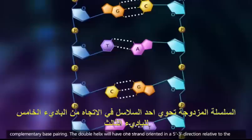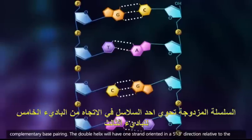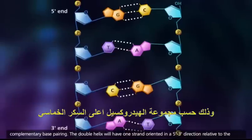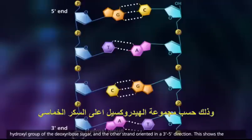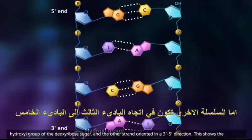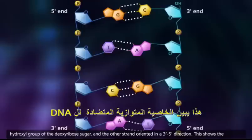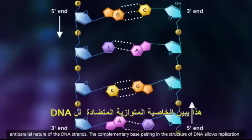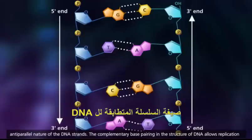The double helix will have one strand oriented in a 5' to 3' direction relative to the hydroxyl group of the deoxyribose sugar, and the other strand oriented in a 3' to 5' direction. This shows the anti-parallel nature of the DNA strands.